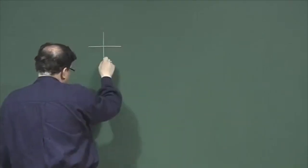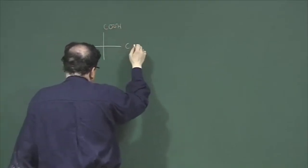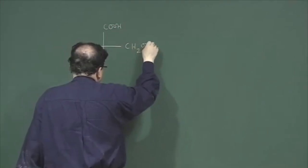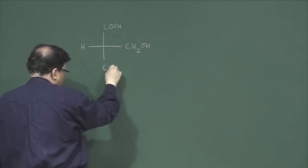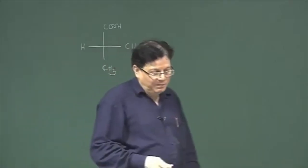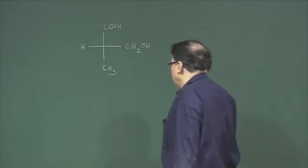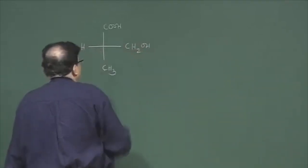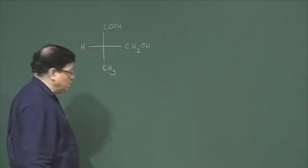Now let us do practice on one or two problems before we go into the next topic. Suppose a molecule is written in a Fischer projection formula — say this is CO₂H, this is CH₂OH, this is H, and this is methyl — and you are asked to assign the absolute configuration, or the RS configuration, of this.